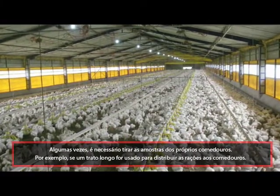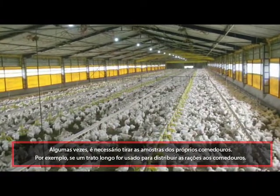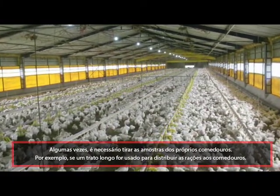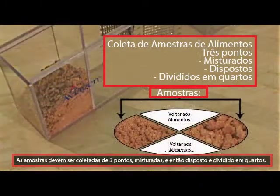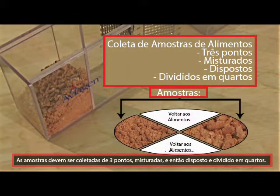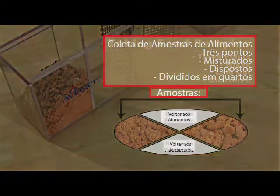For example, if a long auger is used to supply the feed to the feeders. Samples should be taken from three points, mixed and then laid out and quartered. Two opposite quarters should then be taken for testing.